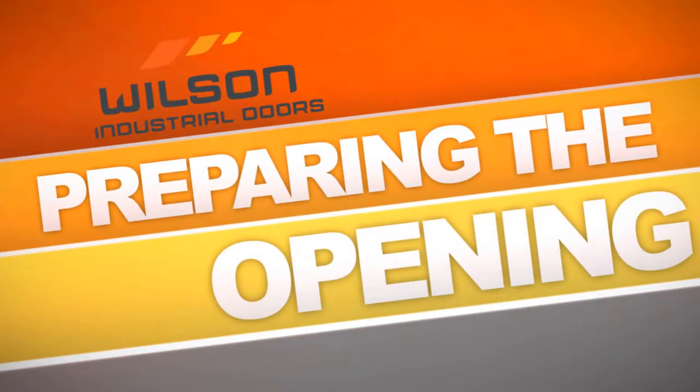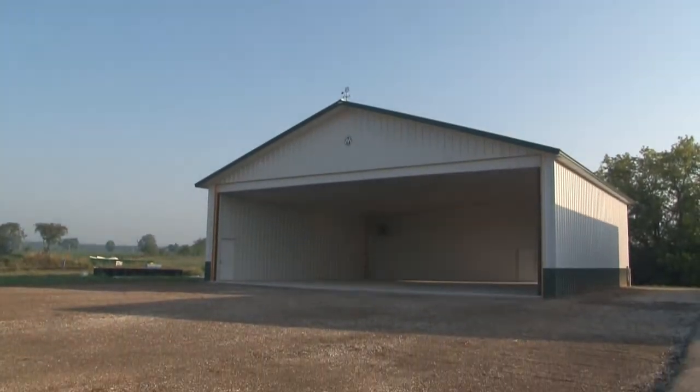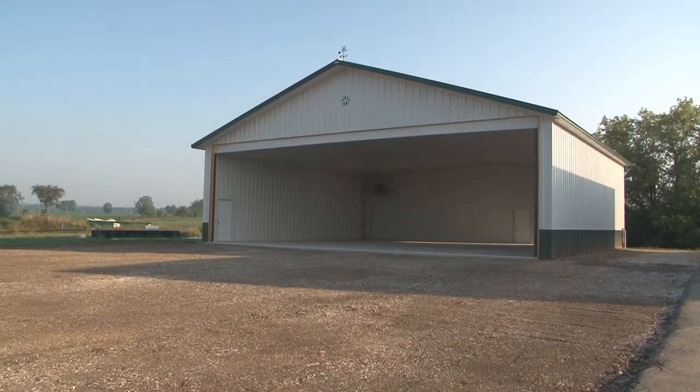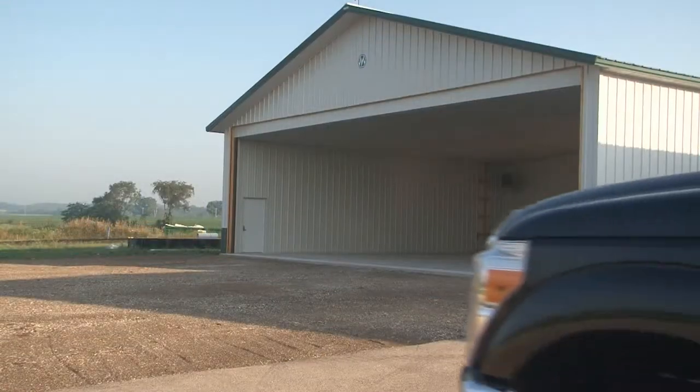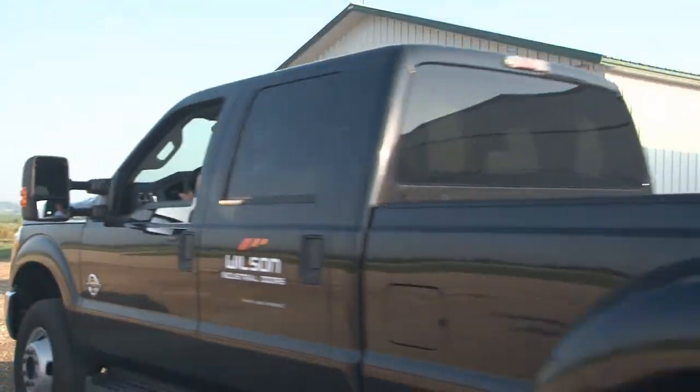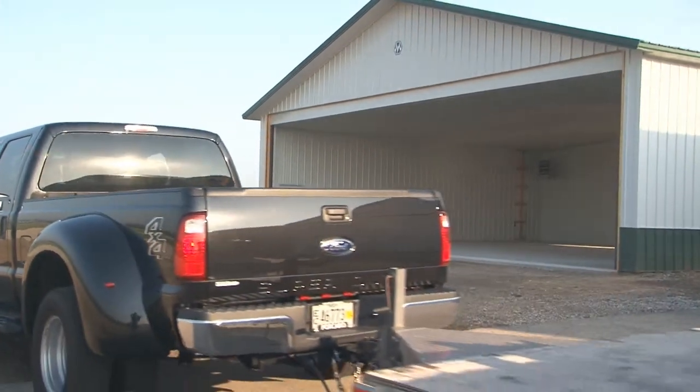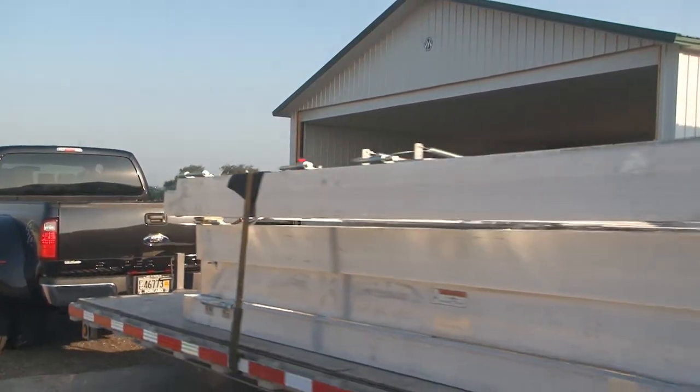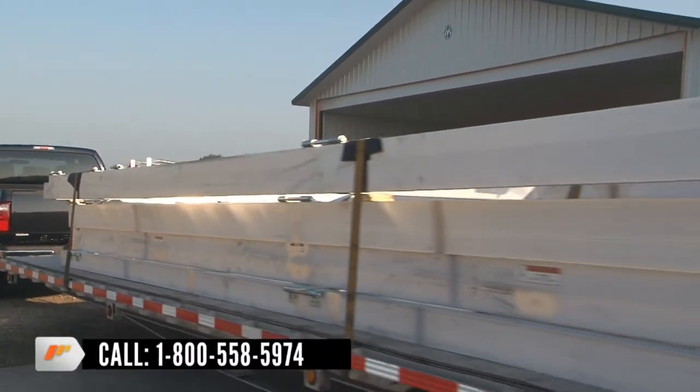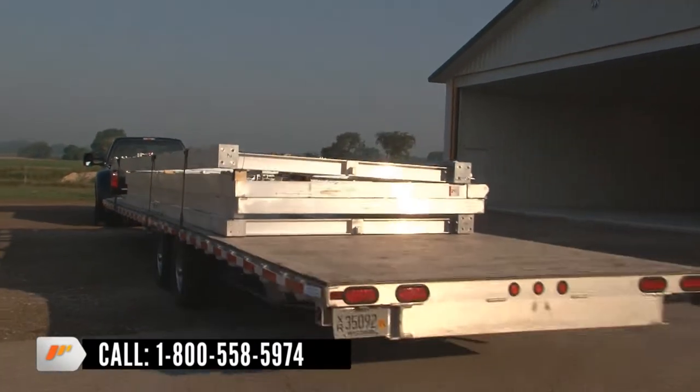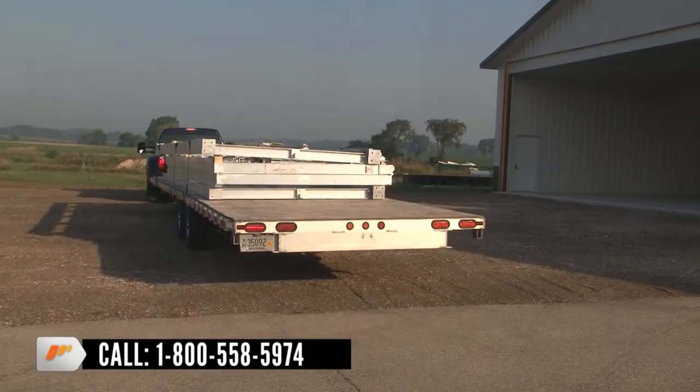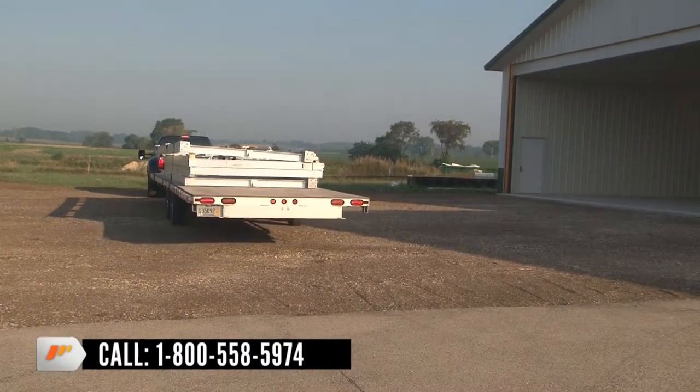Preparing the opening. The surface in front of the door opening should be cleared of all obstacles and be as level as possible for a distance of 2 feet farther than that of the height of the door. The header should be ready for the door when it arrives per specification sent out with original order. If any questions should arise, please call the office at 800-558-5974 and ask for customer service.